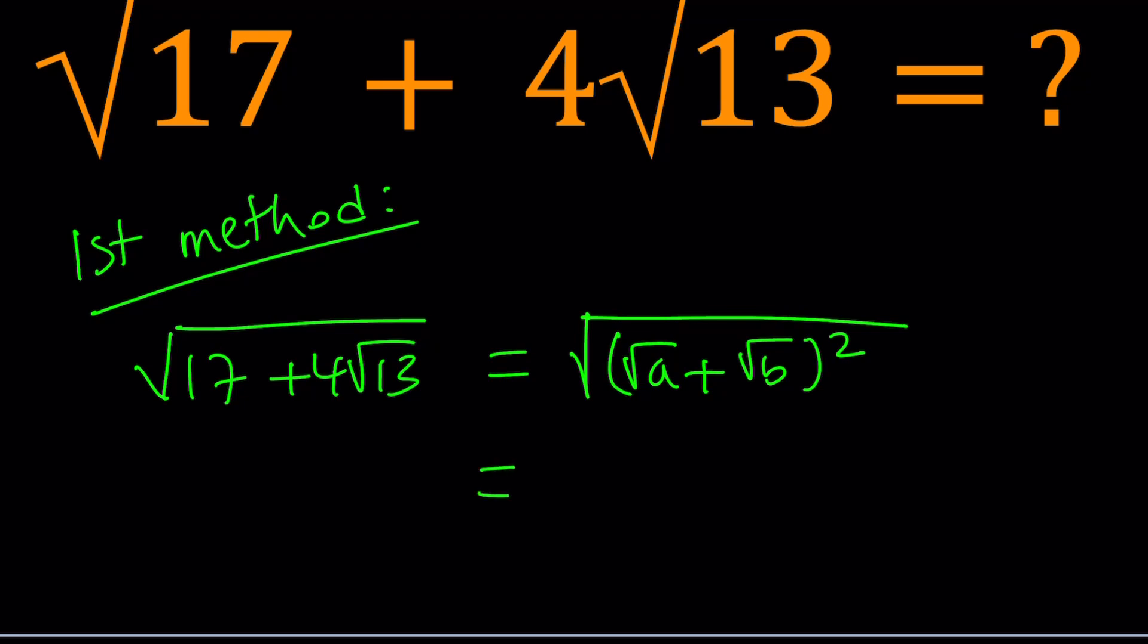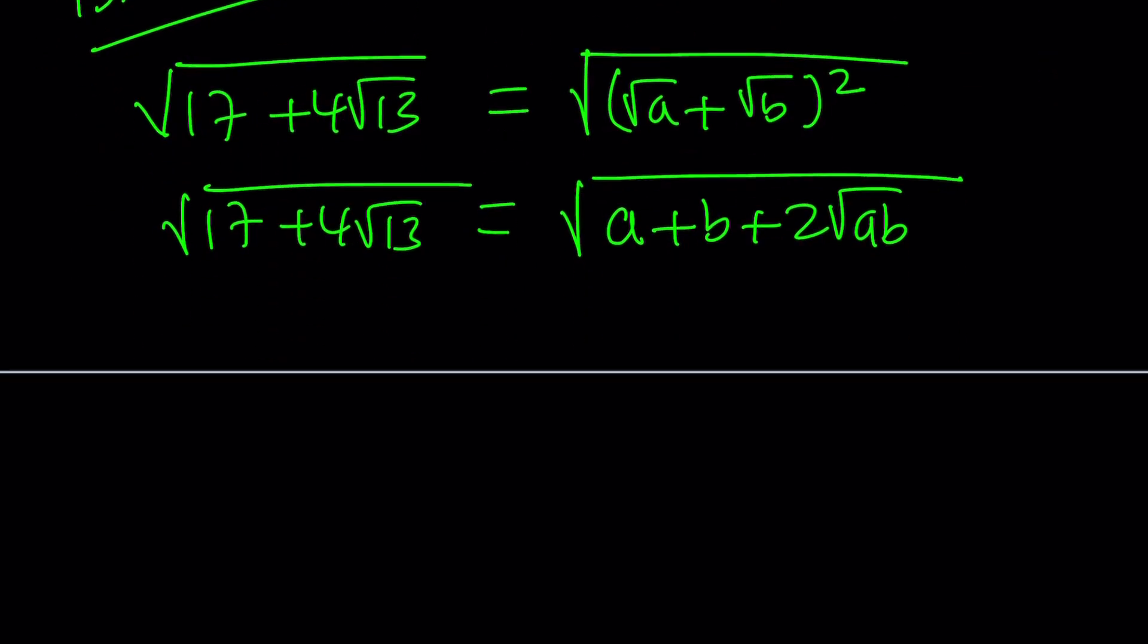So inside the radical, I'm going to have something like this. This is a plus b plus 2 times the square root of ab. And this is what I want to set my expression equal to. And how can I do that? So to be able to do that, notice that I have the 13 inside the radical. So this is the radical piece, which should equal that piece. And this is the part that should equal 17. Now how do I do that?